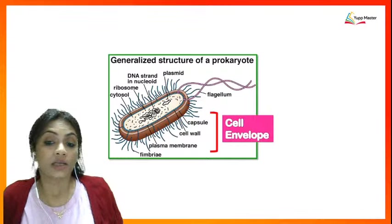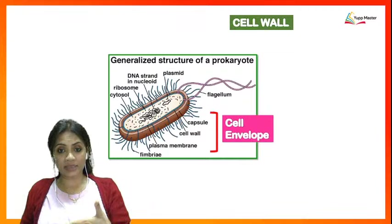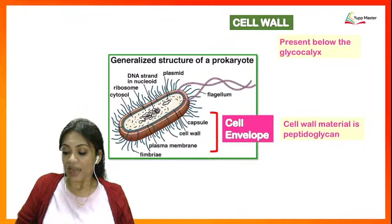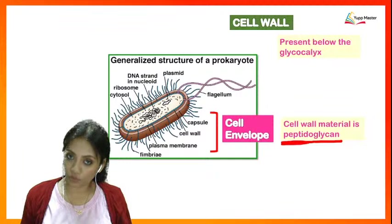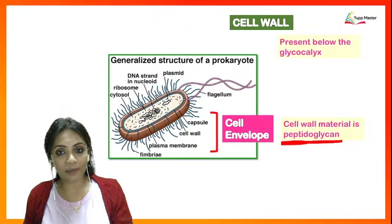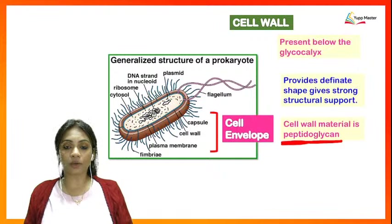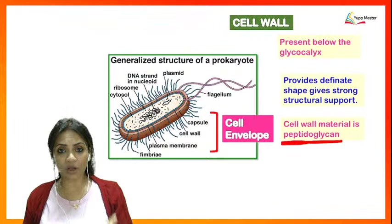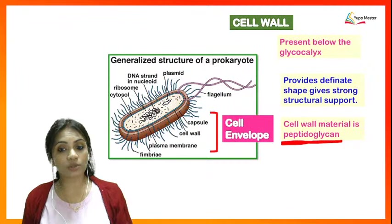The next layer is the cell wall, which is inner to the glycocalyx. It is made up of peptidoglycan — 'peptide' indicating a presence of protein and 'glycan' indicating carbohydrate. So the cell wall is a combination of both proteins and carbohydrates. It also provides a definite shape to the cell, which is why we have the different shapes: round (cocci), rod (bacilli), comma (vibrio), and spiral (spirilla).